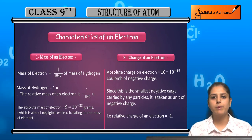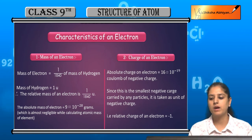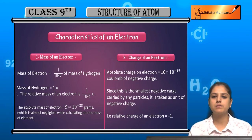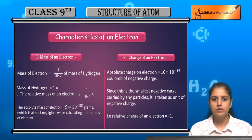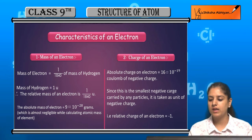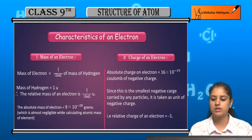Now, charge of electron. The absolute charge on an electron is 16 × 10^-19 coulomb of negative charge. Since this is the smallest negative charge carried by any particle, it is taken as unit of negative charge.